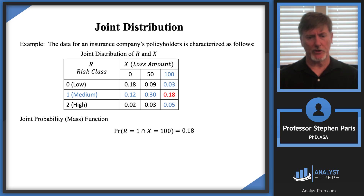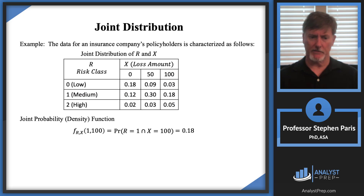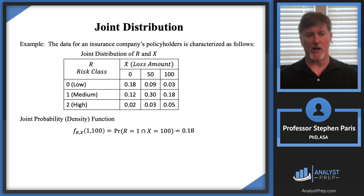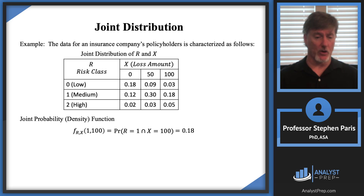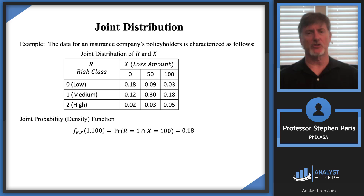The notation I'll use for this probability is the statistical notation for the density of a random variable — an F with a subscript of cap R comma cap X. This is the joint density for the random variables cap R and cap X. In parentheses, the 1 comma 100: the 1 corresponds to cap R equals 1, and the 100 corresponds to cap X equals 100. This is referred to as the joint density.